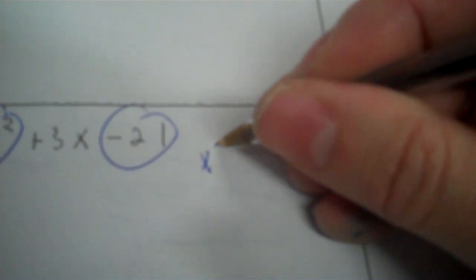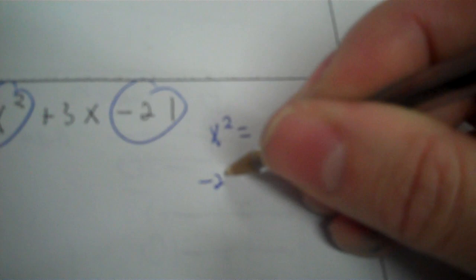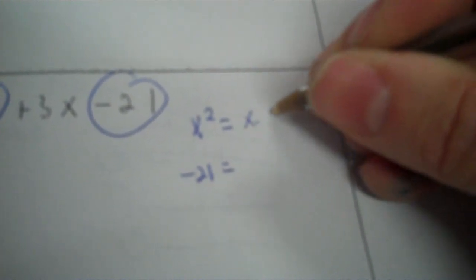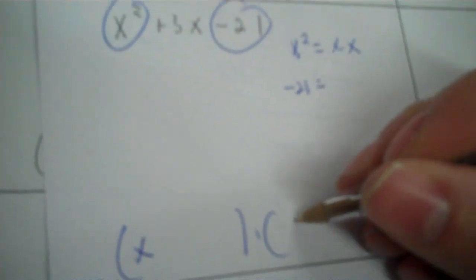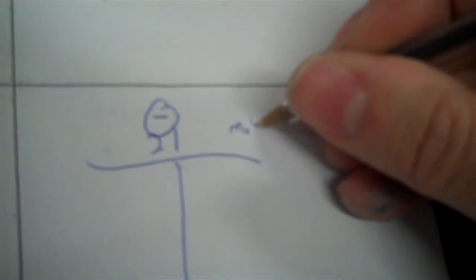Last problem here today. x second plus 3x minus 21. So x second, negative 21. That's x times x. Now I've got to put negative 21 up there. And this is a mismatch because we have a negative. Negative is a mismatch. Positive match. Mismatch, you go positive, negative.